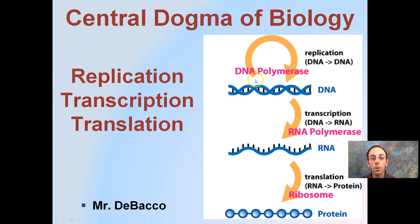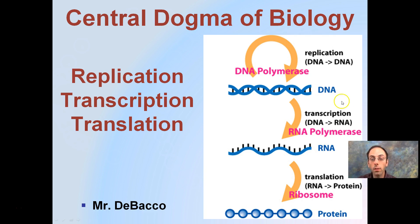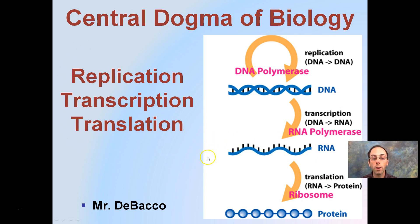DNA can replicate, and that's generating more DNA. DNA can also go through the process of transcription, where it's written differently — you can think of this as DNA being written as RNA. Remember, thymine is present in DNA and uracil in RNA. And then translation, where we're translating our RNA sequence to something completely different — in this case, a protein.